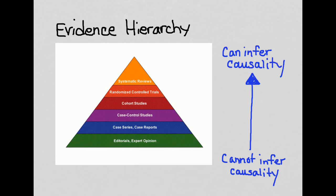Replicability — the ability to replicate a particular effect across a number of different studies — is critical in providing evidence for a relationship. You can never really judge causality based on one study. Different types of studies are better or worse for inferring causality. We're going to go over the different study designs and we'll come back to this, and you'll understand at the end why you can infer causality better from study designs as you go up the hierarchy.